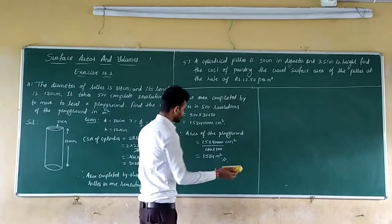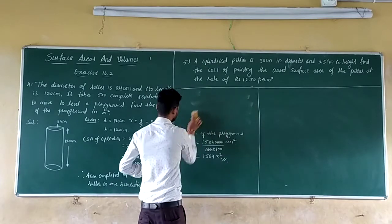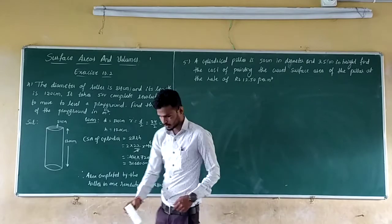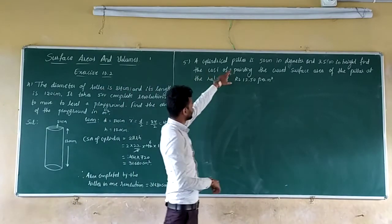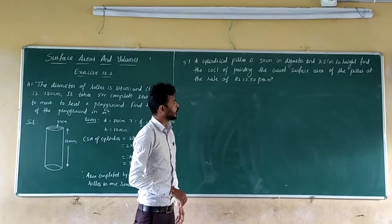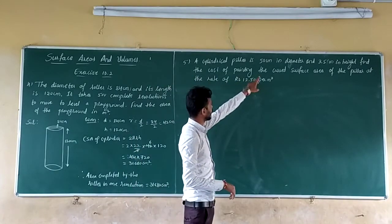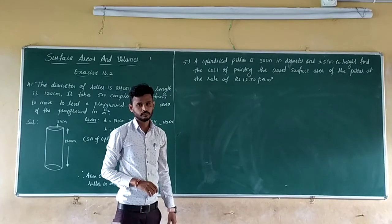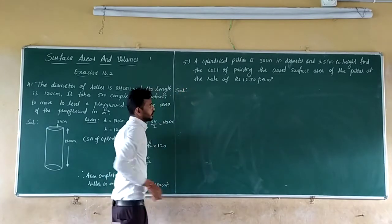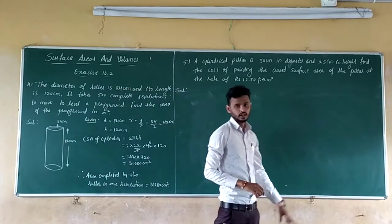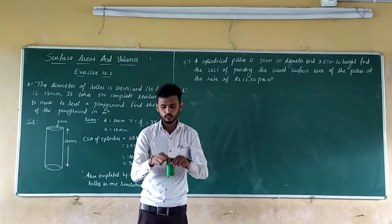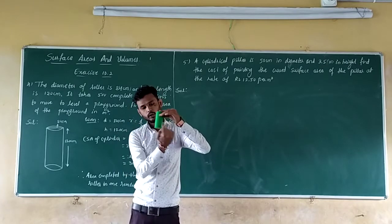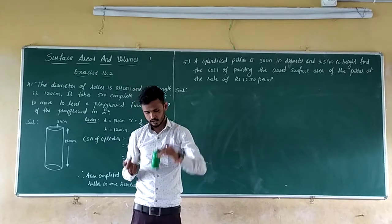Now let us see the 5th question. A cylindrical pillar is 50 cm in diameter and 3.5 m in height. Find the cost of painting the curved surface area of the pillar at the rate of ₹12.50 per m². We need to find only the CSA, since the top and bottom are attached to the ground and ceiling.